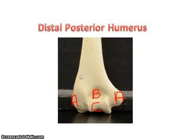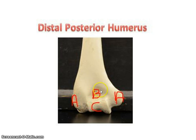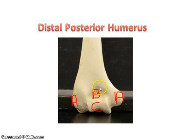Now we're going to look at the distal posterior view of the humerus, so we're down towards your elbow and we're posterior. The way you can tell the posterior aspect of the humerus is it has a deep indentation. The anterior portion has an indentation too, but the one that's posterior is the deepest, and that is called the olecranon fossa.